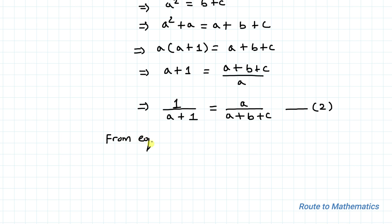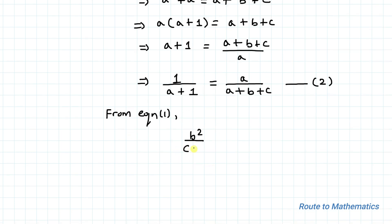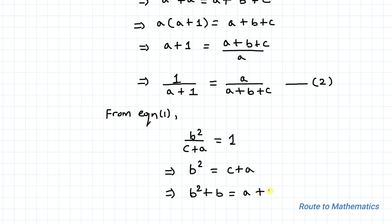Again considering equation 1, we have b² divided by (c+a) equals 1, which implies b² equals c+a. In the next step, adding b to both sides of the equation, we have b² plus b equals a plus b plus c. Taking b as common, we have b multiplied by (b+1) equals a plus b plus c.